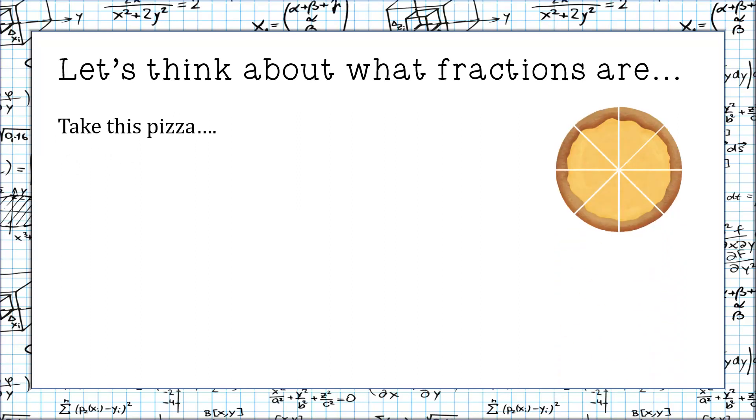It's a cheese pizza. It's been cut into eight slices and we've been told that fractions are parts of a whole. That the numerator is the part and the denominator tells us how many pieces the whole has been cut into, and that if we took one piece of this pizza it would be one eighth.